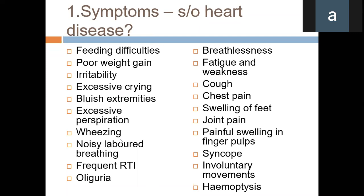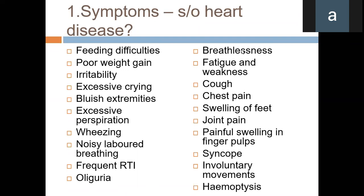Wheezing and noisy labored breathing — so they have noisy breathing — frequent respiratory tract infections. For example, in ASD you see frequent upper respiratory infections, and in other cases like VSD and TOF we have frequent lower respiratory infections. Oliguria is seen in some cases like neonatal coarctation, AS, and hypoplastic syndrome; all those cases will have breathlessness.